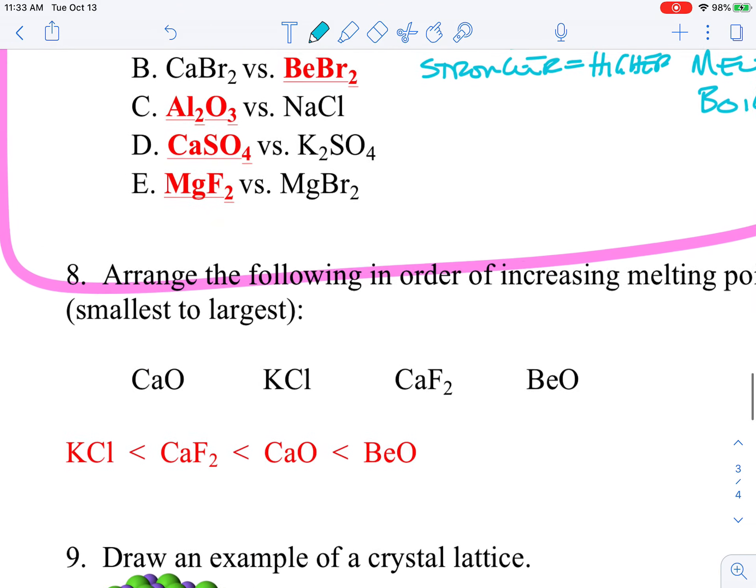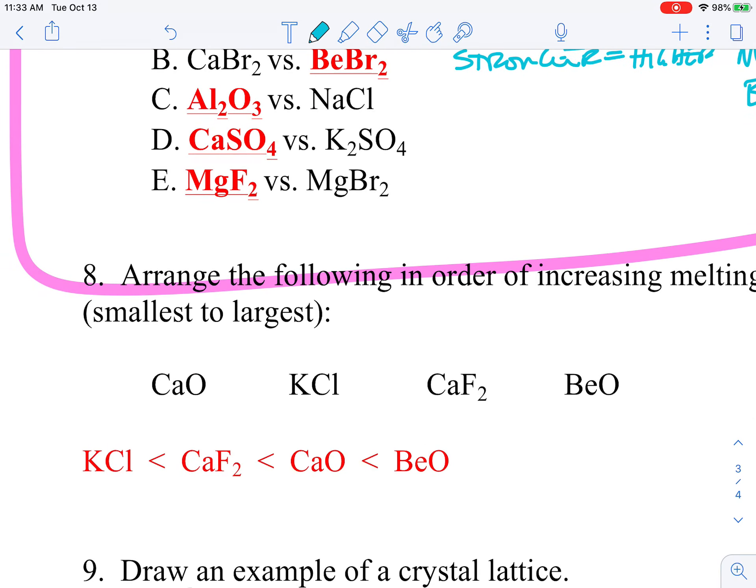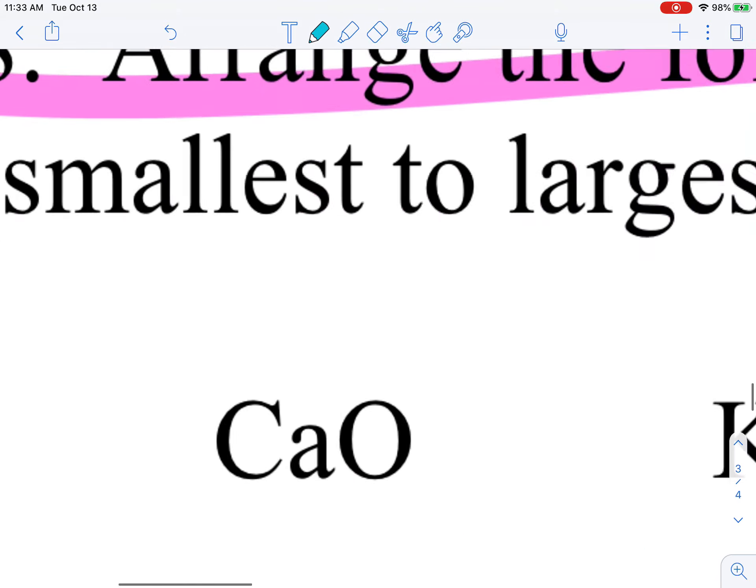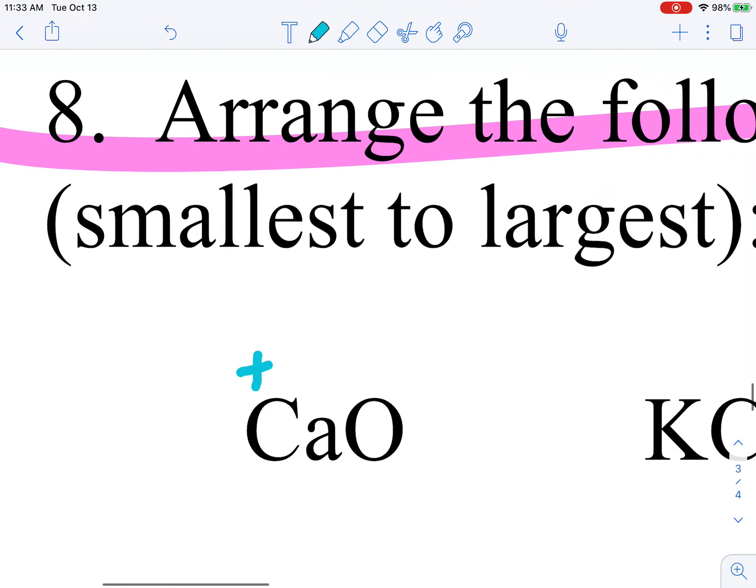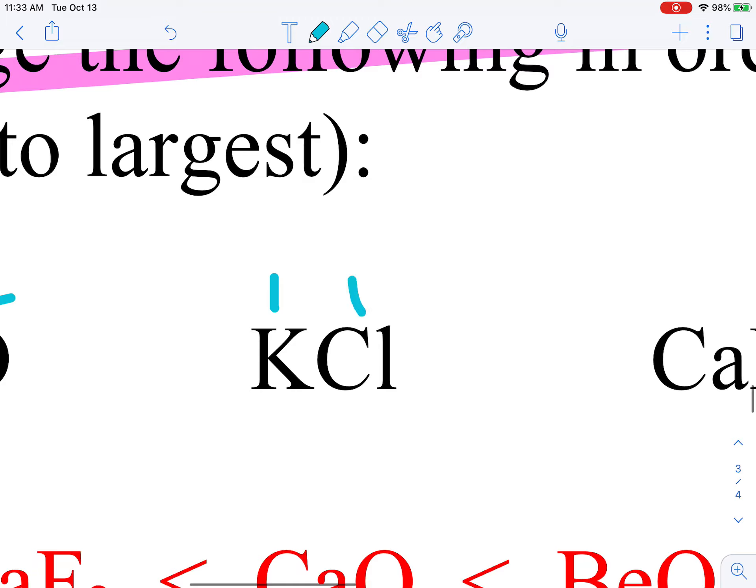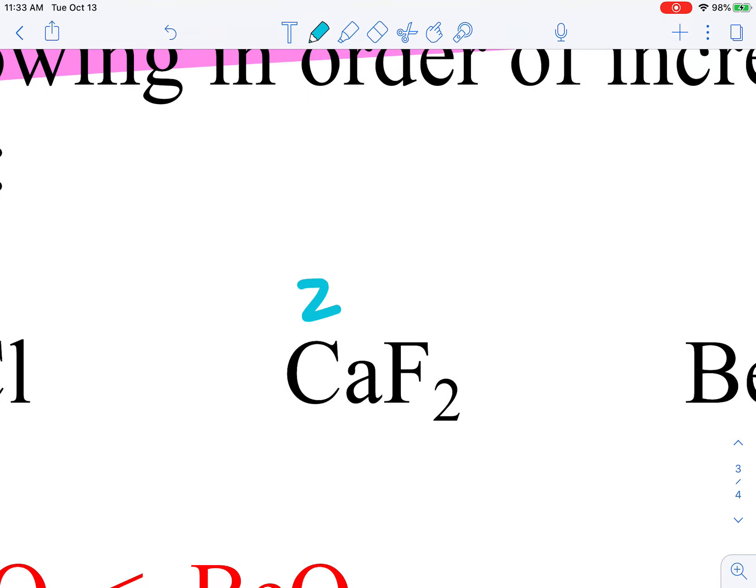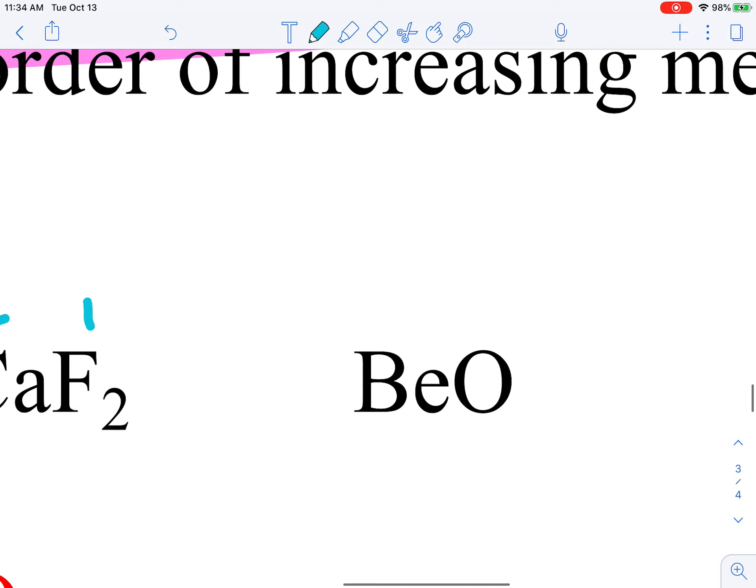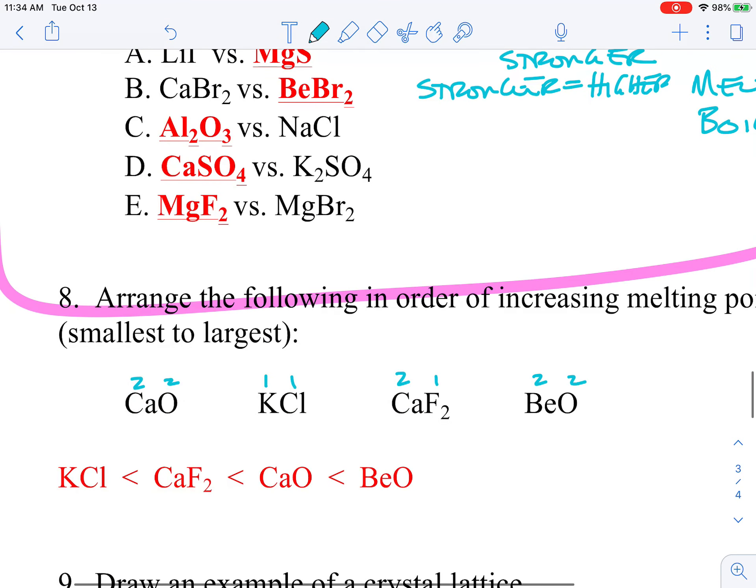If I arrange them, well, all I'm doing here is I have to get all the charges first. So let's get the charges plus two. I'm just going to write the charges. So this is a two two. This is a one one. This is a two one, and this is a two two.